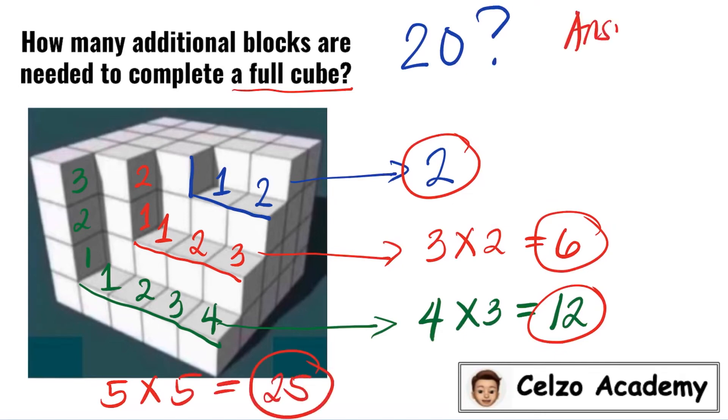So to find the answer, we need to add 2 plus 6 plus 12 plus 25. And that is equal to 45. So we will need additional 45 blocks to complete a full cube that is 5x5x5.